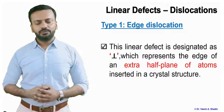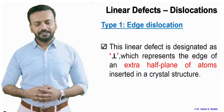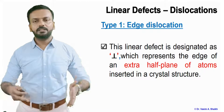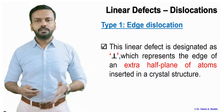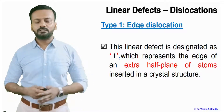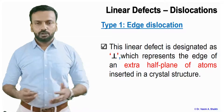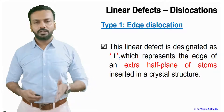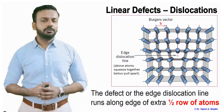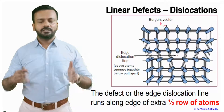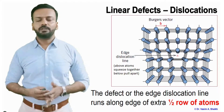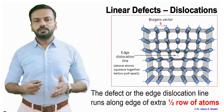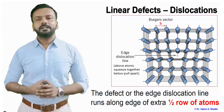Let us see the different types of dislocation. Type 1 is an edge dislocation. Edge dislocation is nothing but it appears as if an extra half plane of atoms is inserted in a normal crystal. It can also be shown in terms of a perpendicular sign. In the image, you can see a perfect crystal and in the center there seems to be an extra half plane of atoms inserted, with the edge dislocation line shown by the perpendicular sign.